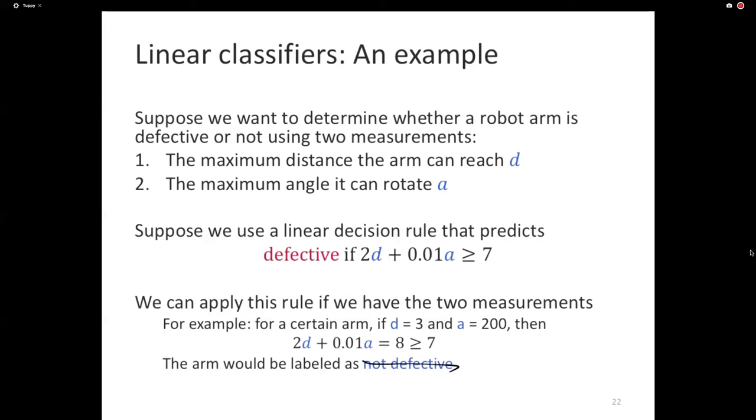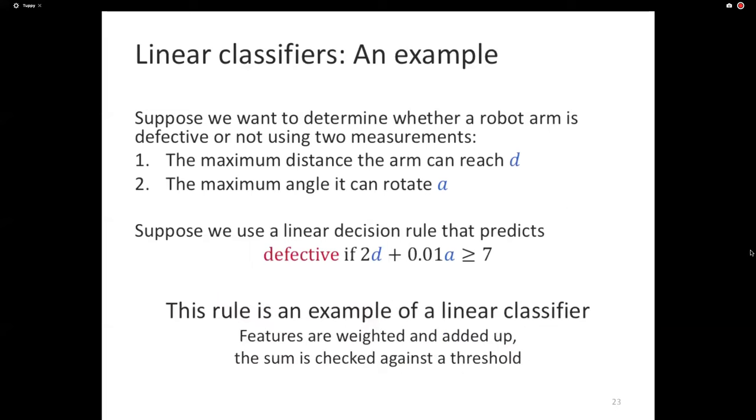Let's say using something that you know about the domain, you've decided that the arm is defective if 2 times d plus 0.01 times a is more than 7. Don't ask me what these numbers mean. I just made them up. Now, a new arm comes in. You run some tests and you find that d equals 3 and a equals 200. You can plug in those values. You get the number 8. 8 is more than 7. You decide that it should be defective. This is the general way in which all linear classifiers work. You have a set of features. In this case, there are two features, a and d. You assign a certain real valued weight for each feature. In this case, you have 2 and 0.01. You have a certain threshold, 7.